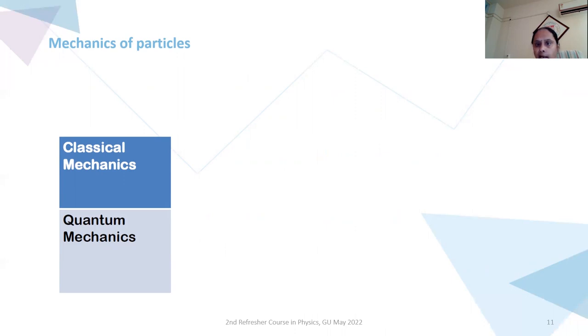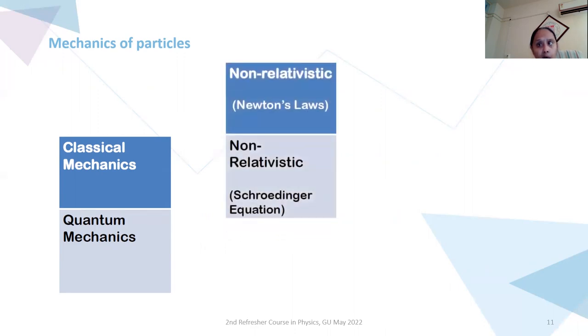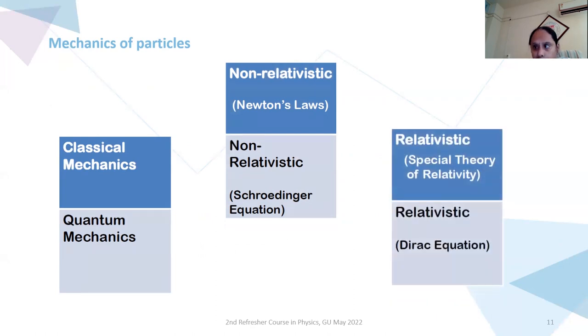In general, mechanics of particles is divided into three parts. First one is classical mechanics. Then we have non-relativistic, which is nothing but Newton's laws. And third one is relativistic, which is actually the special theory of relativity. In classical mechanics, its basis is quantum mechanics. For non-relativistic, Schrodinger equation is the basis. And for relativistic mechanics, we have Dirac equation. And these are the basic tools for different mechanics observed in either classical mechanics or non-relativistic or relativistic physics.